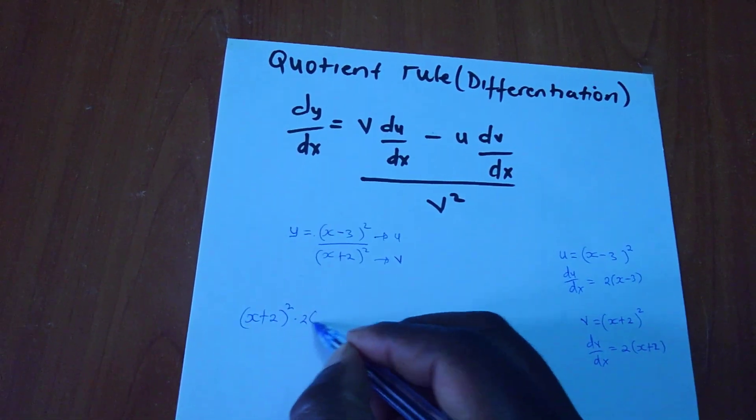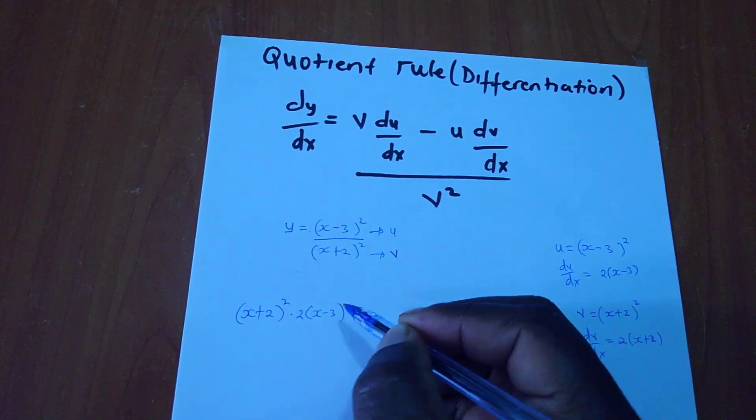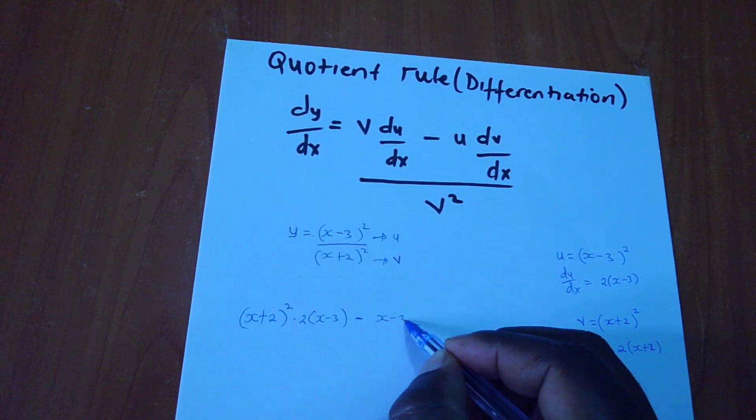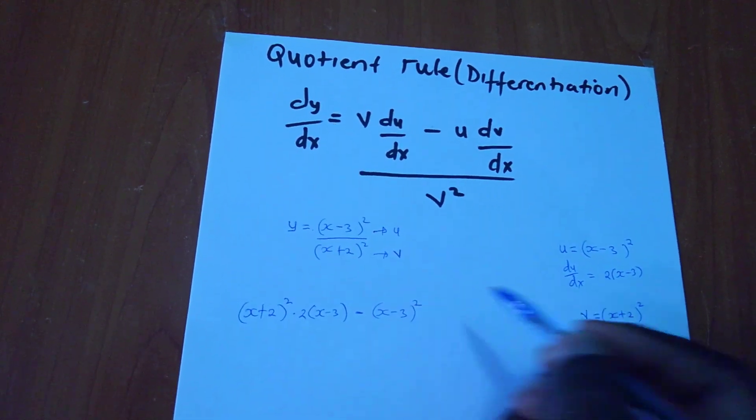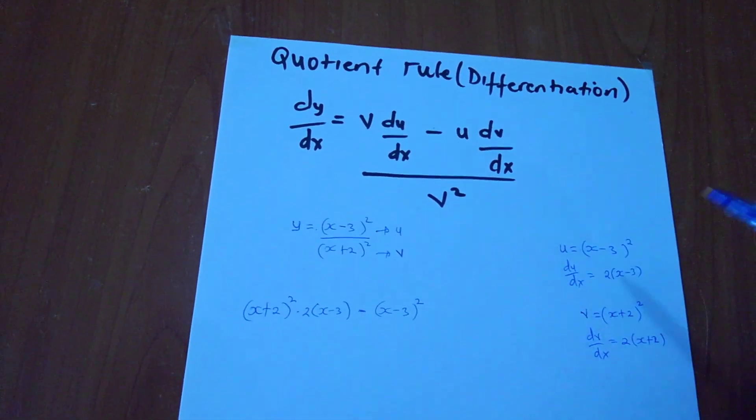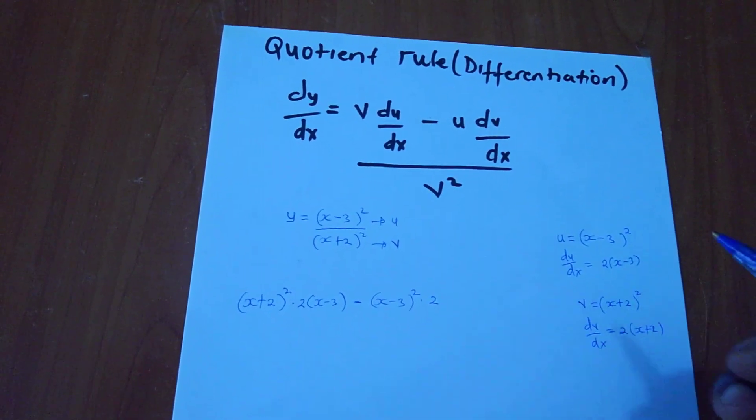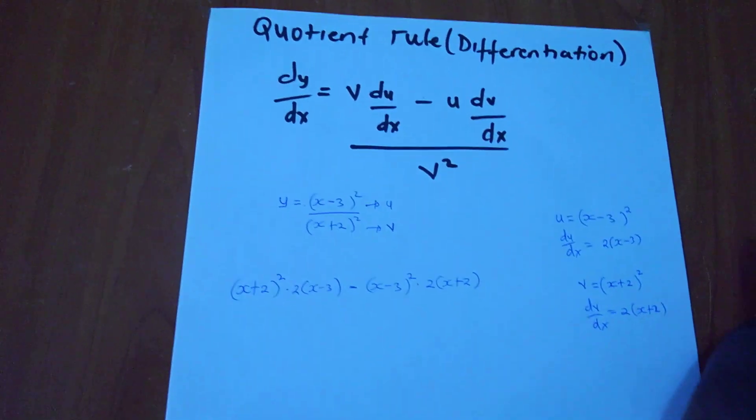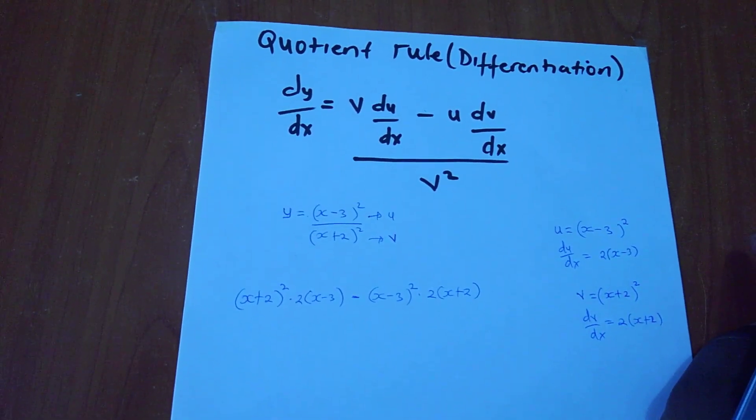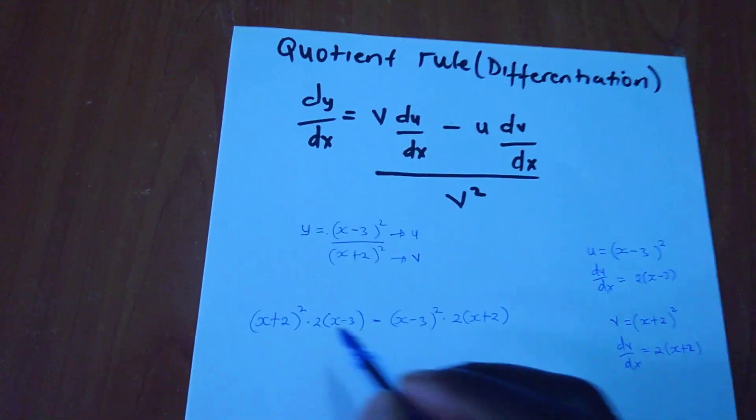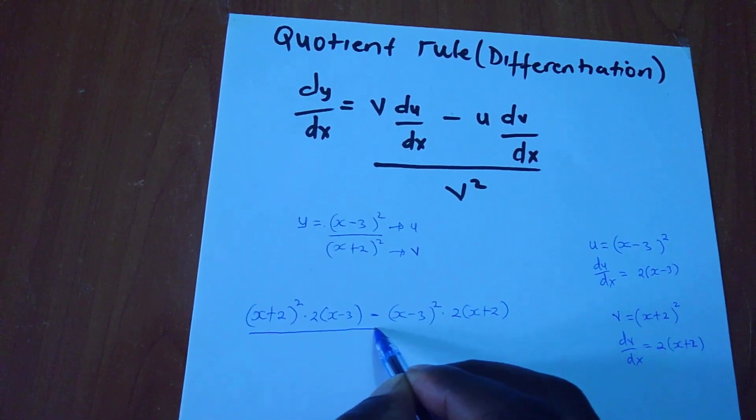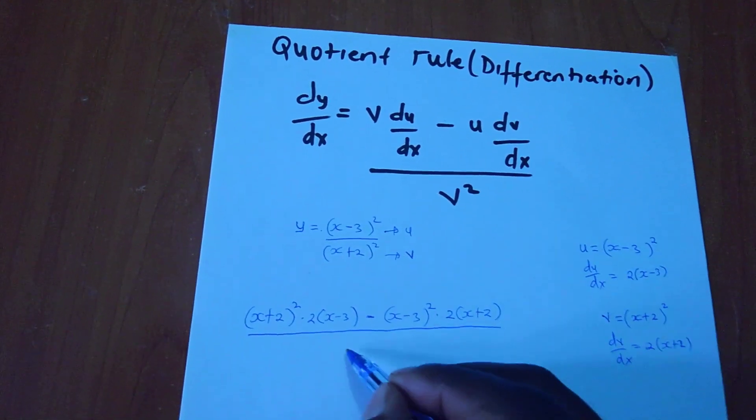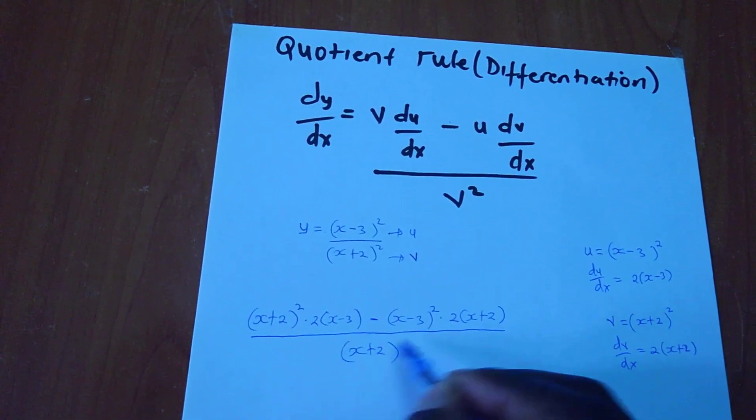Then times my du/dx, which is 2 times (x minus 3), then minus what's my u: (x minus 3) squared. Then what's my dv/dx? It is times 2(x plus 2). I have to include this v squared. My v squared will be (x plus 2) to power 4.